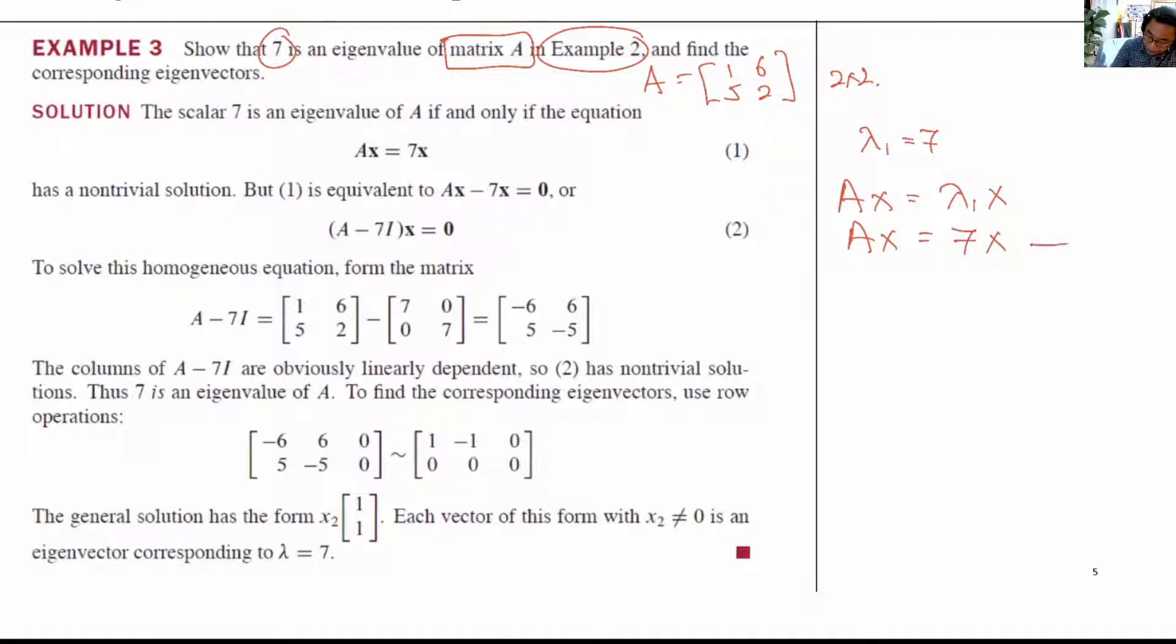Now, the trick is this. Once we have this equation, we move the right-hand side to the left-hand side: Ax minus 7x equals 0.